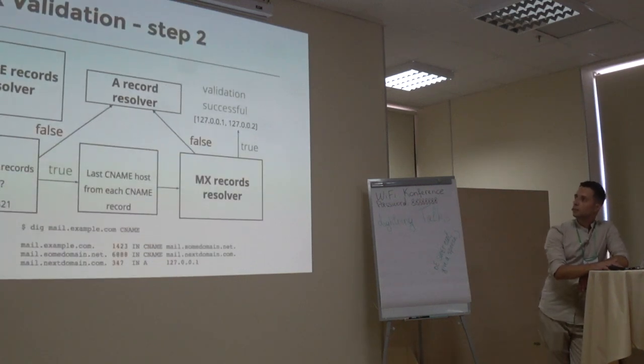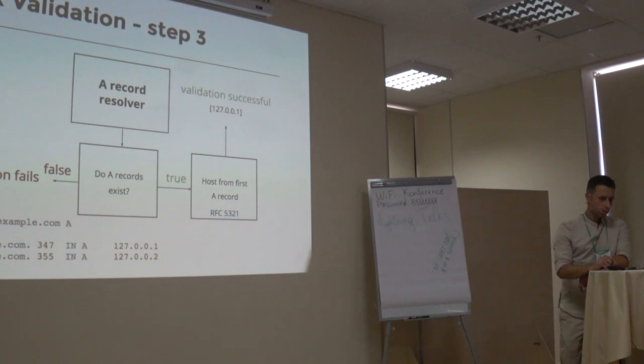Next, CNAME records resolver just tries to extract host from domain CNAME records. If they exist, CNAME records resolver just transfers control to a MX resolver. Otherwise, to A record resolver. A resolver just checks domain A records existence and saves result as an IP address in a list. It's very simple.